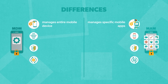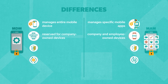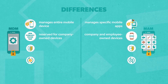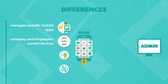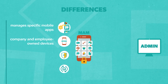Number two: MDM is usually reserved for company-owned devices, while MAM can be used for both company- and employee-owned devices. This means that admins often use MAM to manage apps on employees' personal devices that are used for work purposes.